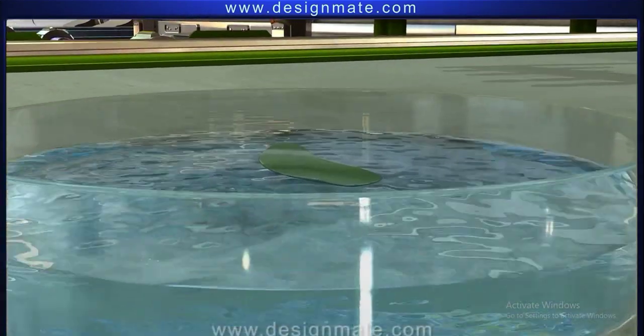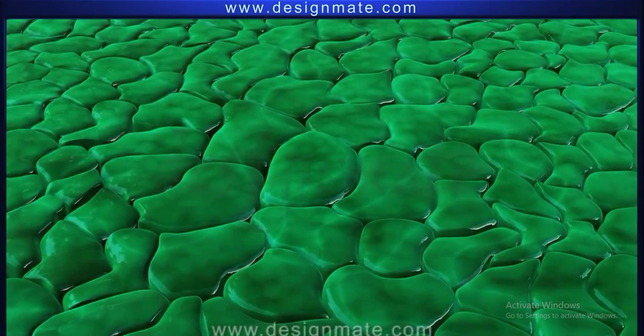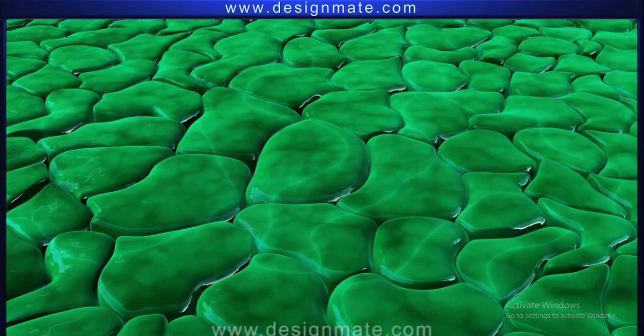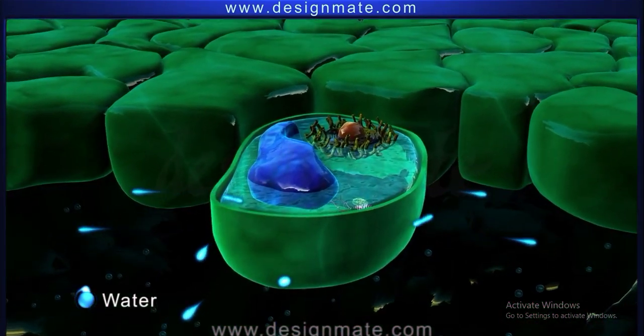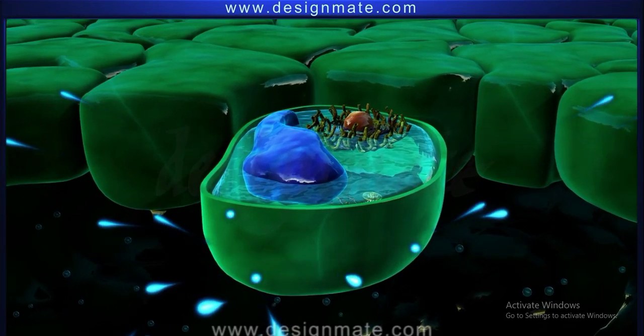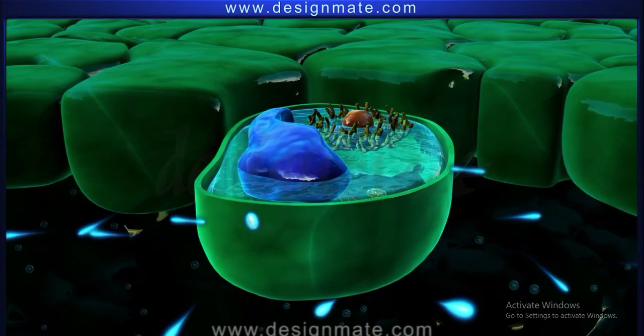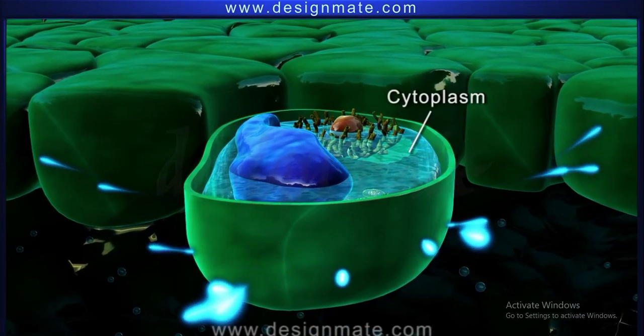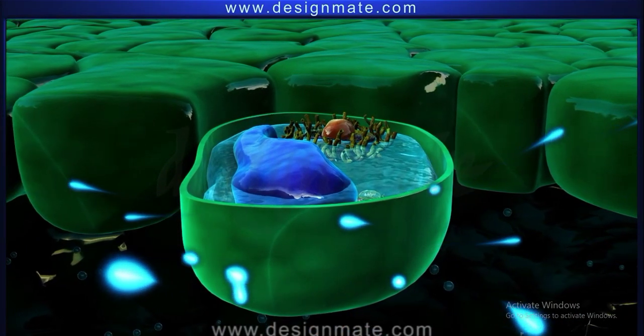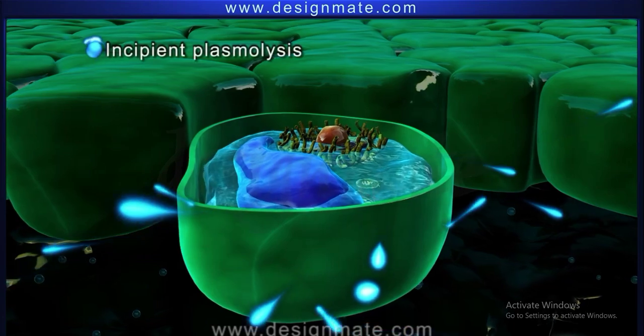A closer look within a cell shows that water molecules from within the cell diffuse across the semi-permeable cell membrane to the sugar solution. After a few moments, shrinkage of the cytoplasm is detected. The first sign of shrinkage is called incipient plasmolysis.